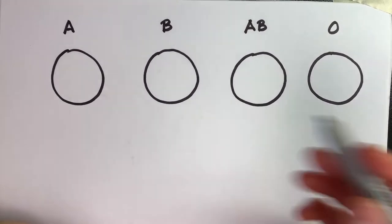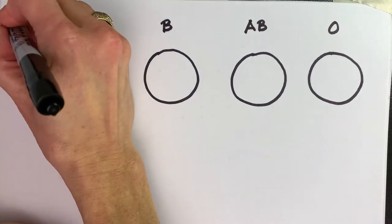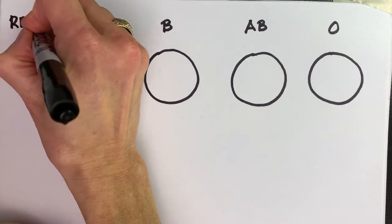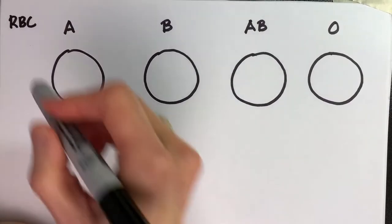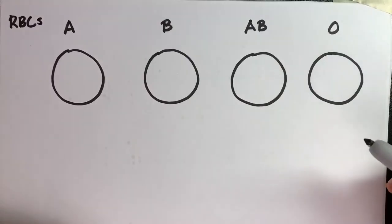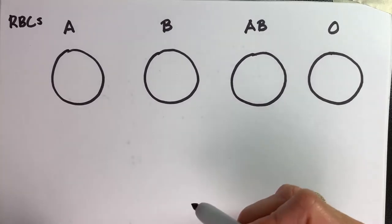So we're thinking about these are our red blood cells, types A, B, AB, and O. And let's put some words to this. This is the red blood cell row, and these red blood cells have little markers on them, little markers that are called antigens.